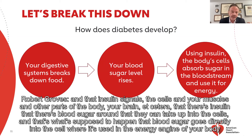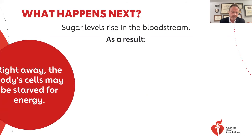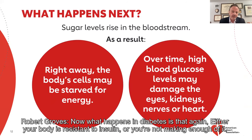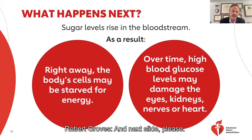That blood sugar goes directly into the cell where it's used in the energy engine of your body. Now, what happens in diabetes is that either your body is resistant to insulin or you're not making enough of it. The cells aren't getting that fuel and they start to go into starvation. And over time, high blood sugar levels will damage the eyes, the kidneys, the nerves, or the heart. It really has wide-ranging effects throughout the body.